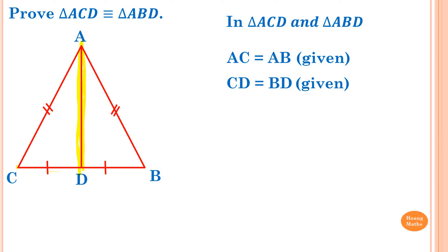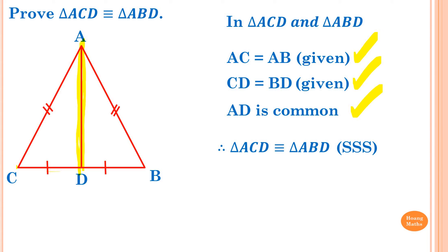The last fact is that AD is a common arm between triangle ACD and triangle ABD, so we write 'AD is common.' Now we have three corresponding sides equal, so we write the final statement: therefore triangle ACD is congruent to triangle ABD, rule SSS, because three corresponding sides are equal. Note: the three lines symbol means 'is congruent to.'